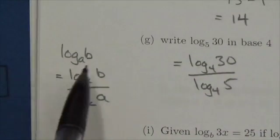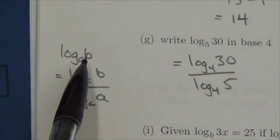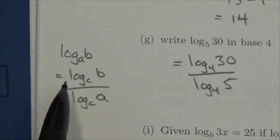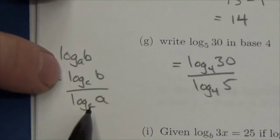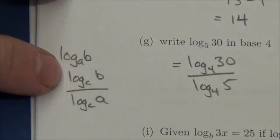We saw in a previous question this is the rule we're looking at. Log base a of b can be rewritten with base c as long as I write it like this: log base c of the argument divided by log base c of the base.